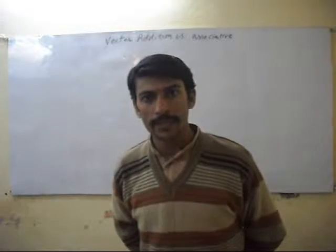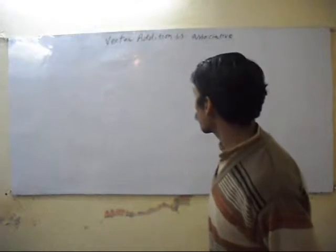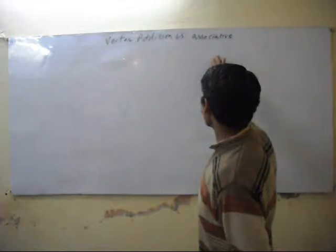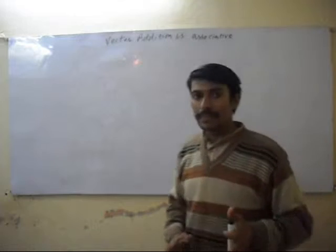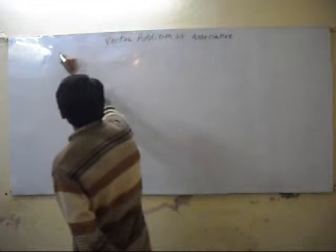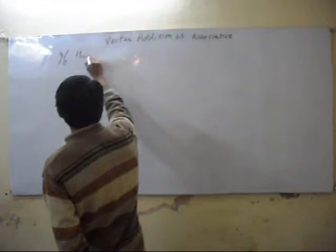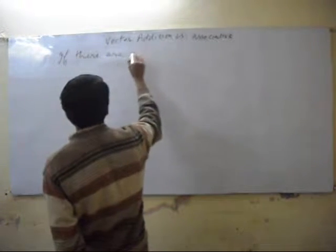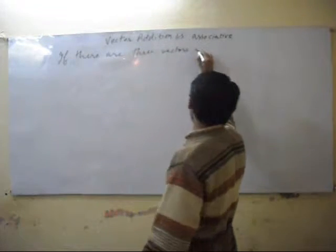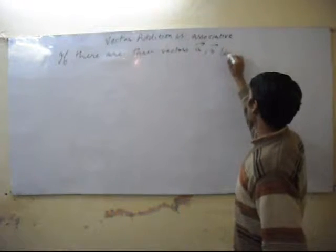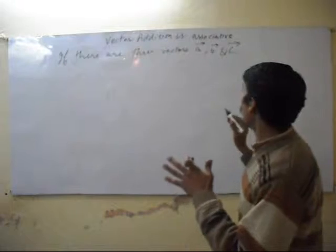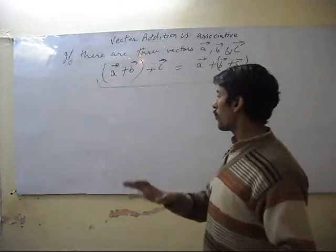Welcome dear students. In the next feature of vector: vector addition is associative. Associative means connector. If there are three vectors A, B, and C, their addition is associative. Let us explain this in detail.